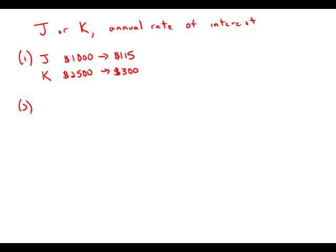For which type investment J or K is the annual rate of return greater? Well, statement number one tells us that investment J returns $115 on a $1,000 investment and K returns $300 on a $3,500 investment.